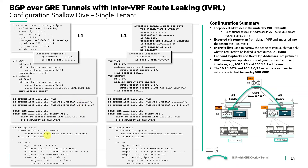Importantly, the BGP neighbor source uses the tunnel IP address — establishing BGP over the GRE tunnels. Connected routes in the environment — the 10.1.1.0 and 10.1.2.0 networks — are redistributed as well.